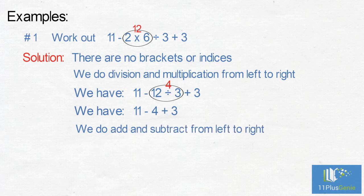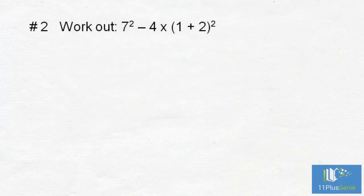We do add and subtract from left to right, so 11 minus 4 equals 7, 7 add 3 equals 10.